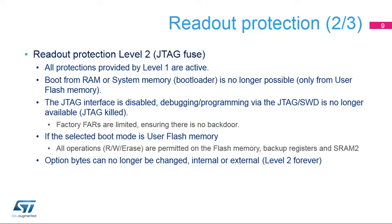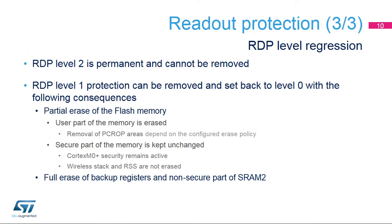RDP-WRP option bytes can no longer be changed, as well as all the other option bytes. Changing the level of RDP protection is only permitted when the current protection level is 1. RDP level 2 is permanent. Changing the RDP protection level from 1 to 0 will automatically erase the non-secure part of the flash memory, SRAM2, and backup registers. The secure part of the flash is not impacted, and the security remains unchanged.